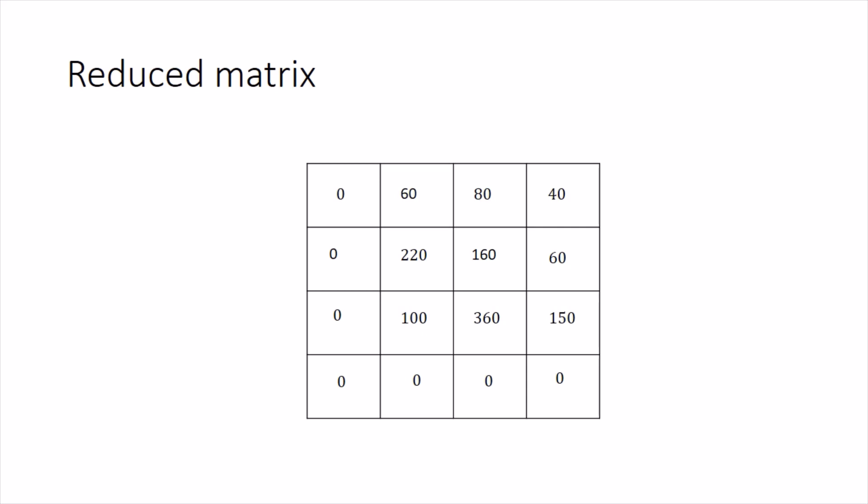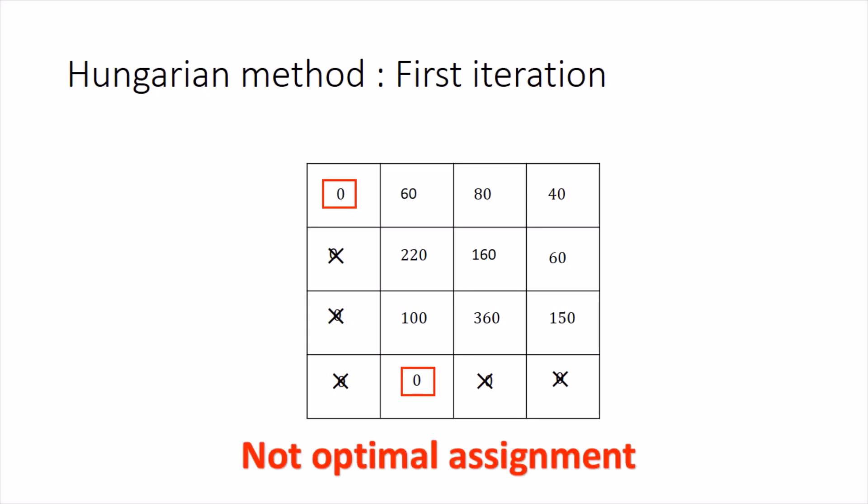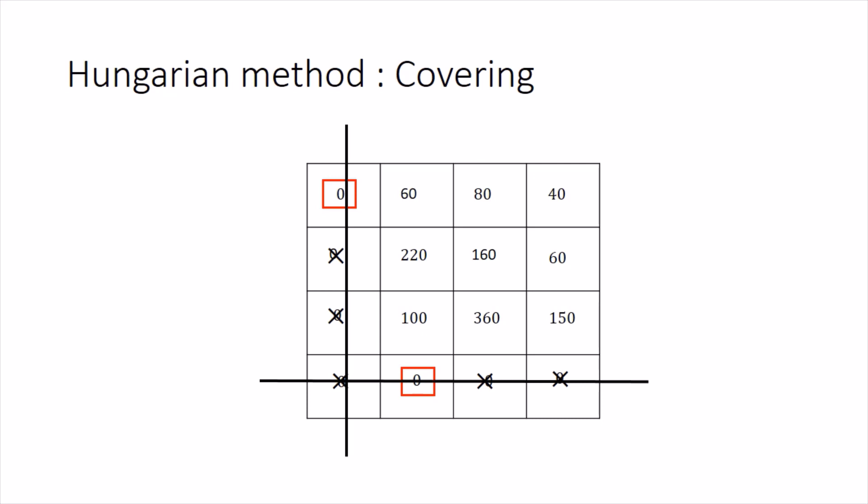The next step is to make assignments, starting with the row having the minimum number of zeros. The first row has exactly one zero, so we assign there, and cross out the rest of the zeros in that column. In the last row we are left with three zeros; arbitrarily box one and cross the rest. This first iteration gives only two boxed zeros, but we need four for an optimal assignment, so we must create more zeros. Using two lines we cover all the zeros.